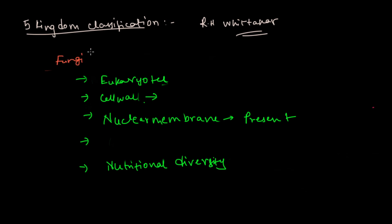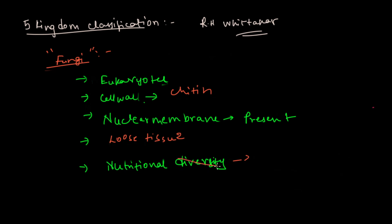Now for Fungi: they are eukaryotic. Cell wall is present but made up of chitin — a chitinous cell wall. Nuclear membrane is present and they have a loose tissue type of organization, which can be asked in examination. Nutritional diversity is not broad — nutrition is only heterotrophic. Fungi are only heterotrophic. You can say that fungi are the ancestors of plants and animals, which will be discussed when we cover fungi in detail.